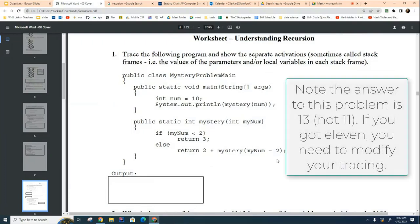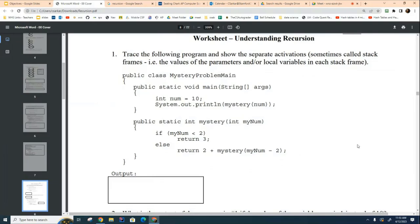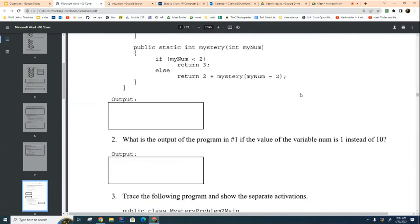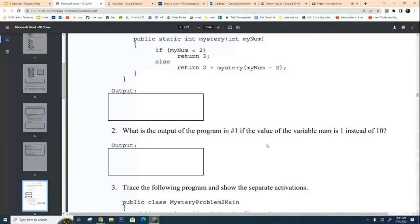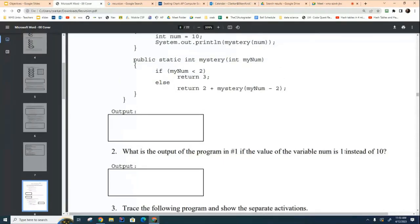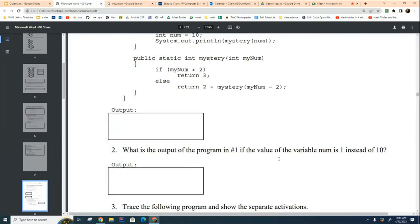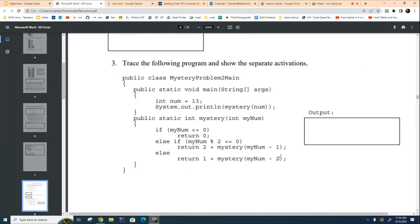A lot of kids put 11, and so you want to make sure that your call tracing strategy, whether it's this one or your own, whatever you develop, make sure it gets you to the right answer of 13 and not 11. If you've got 11, try to figure out what you need to correct in your tracing ability. Now I'm going to ask you to move on to the second one, which is just below it, where we're going to do the exact same thing except we're going to call it initially with the number 1. Once you're done with number two, please move on now to number three, which you can see is much more difficult.